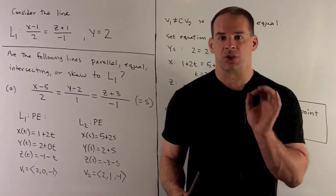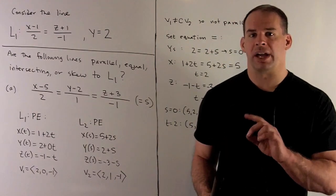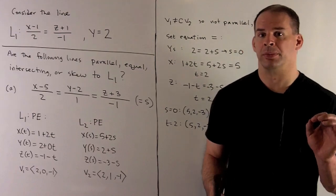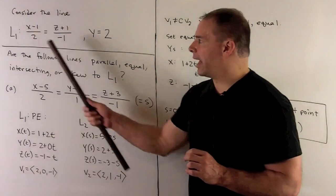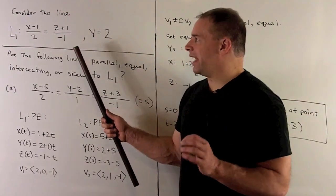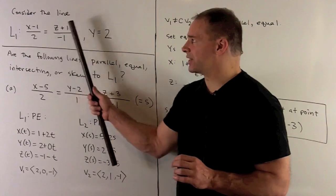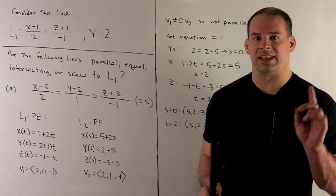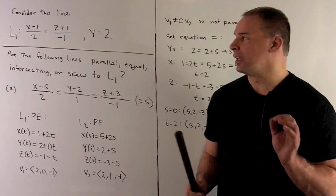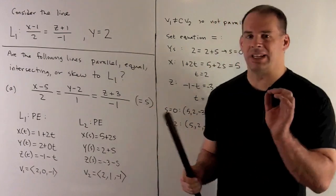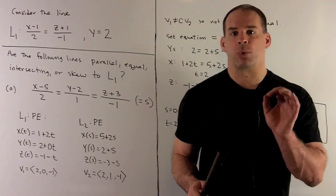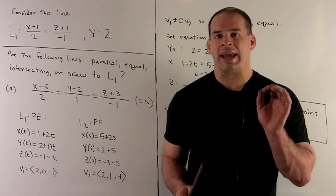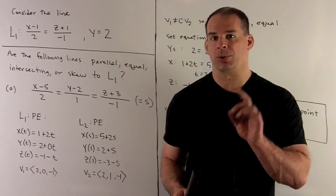The first step is to switch from symmetric equations to parametric equations. For L1, we take the terms for x and z, set them equal to t, and isolate x and z. For y equals 2, we leave that as is — or equivalently, y equals 2 plus 0t.